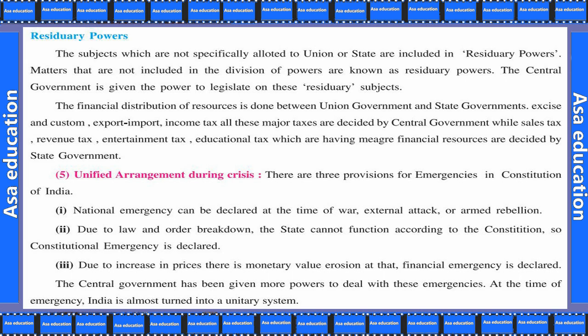The financial distribution of resources is done between union government and state government. Excise and custom, export, import, income tax — all these major taxes are decided by the central government. Where sale tax, revenue tax, entertainment tax, educational tax — which have major financial resources — are decided by state government. Yeh sab taxes central government se related hain, woh decide karti hai. Sale tax, revenue tax, entertainment tax, education tax — yeh sab state government karti hai.